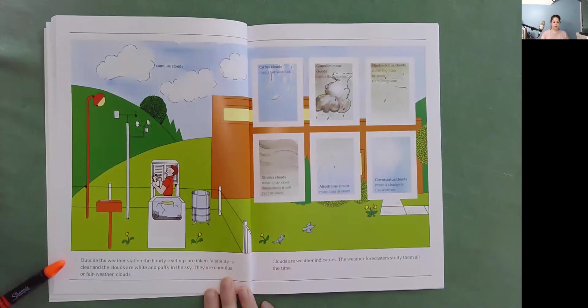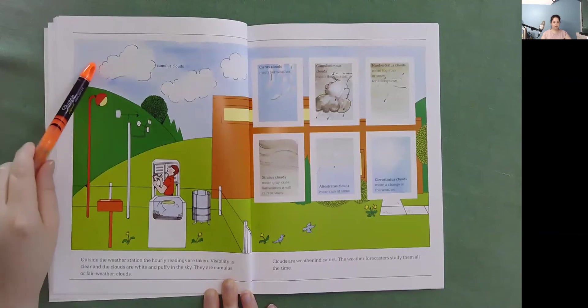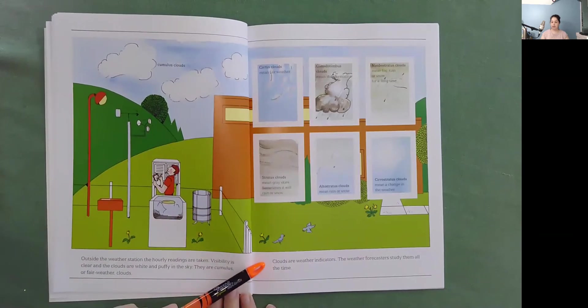Outside the weather station, the hourly readings are taken. Visibility is clear and the clouds are white and puffy in the sky. They are cumulus or fair weather clouds. Clouds are weather indicators. The weather forecasters study them all the time.